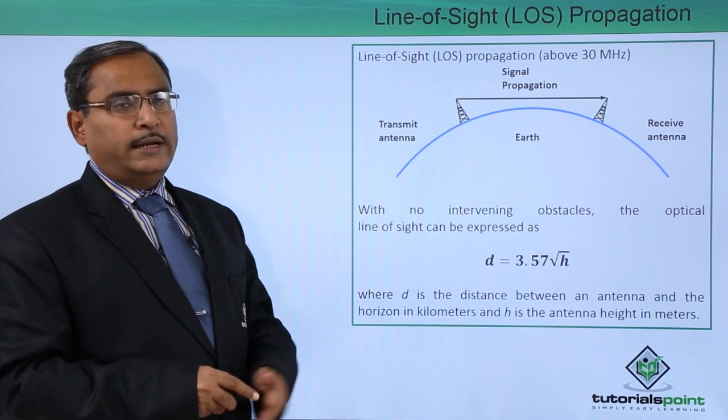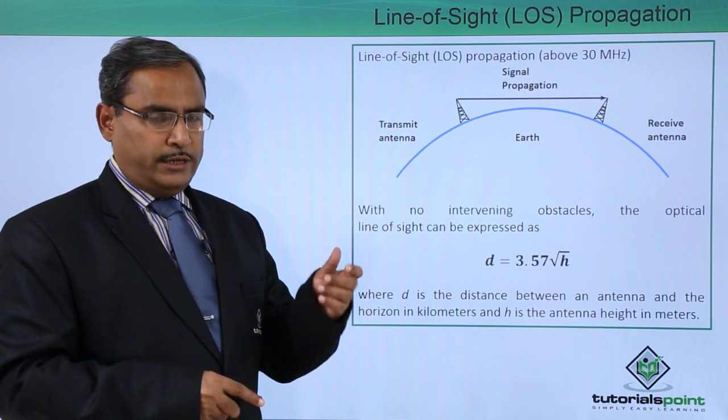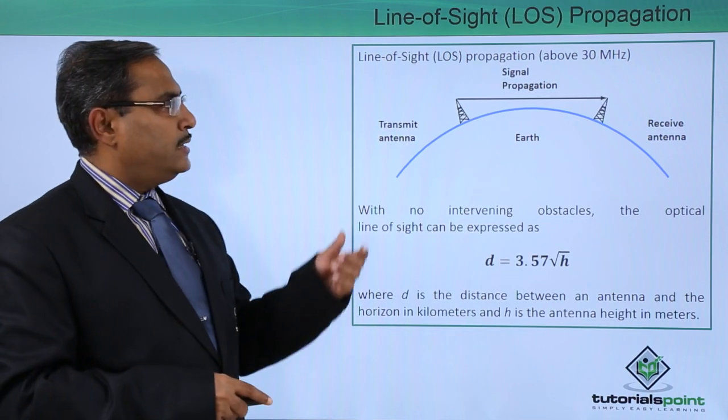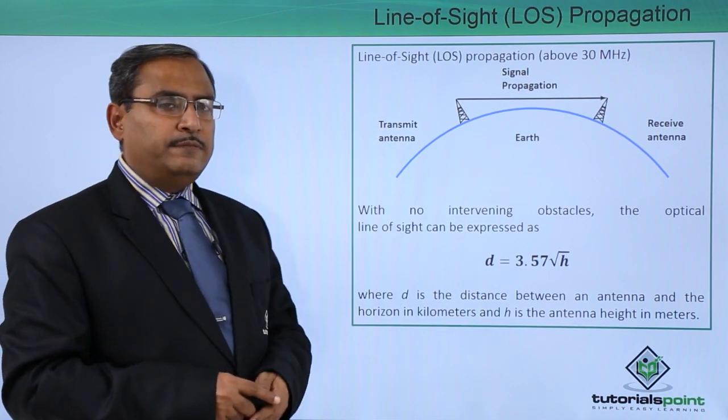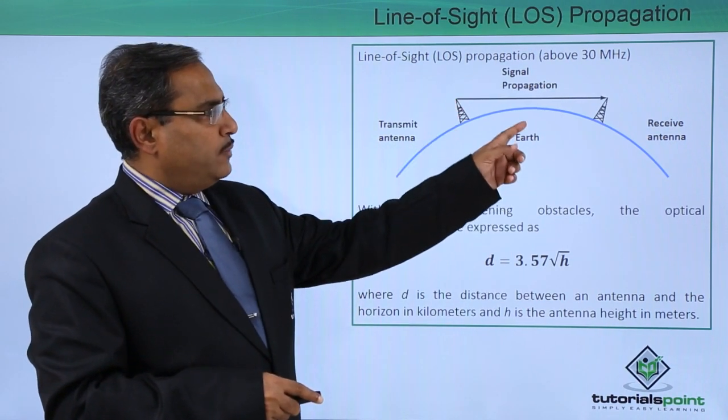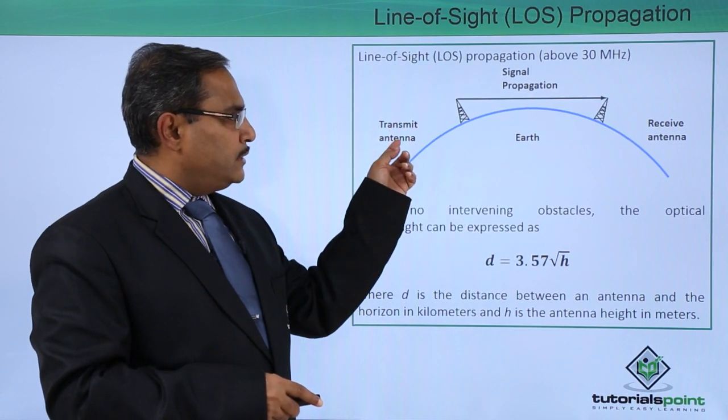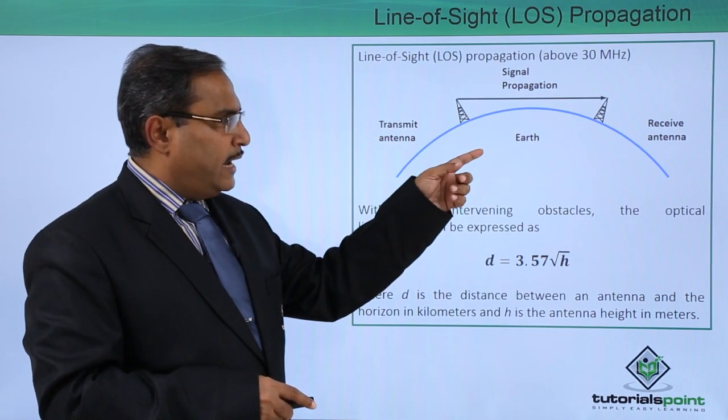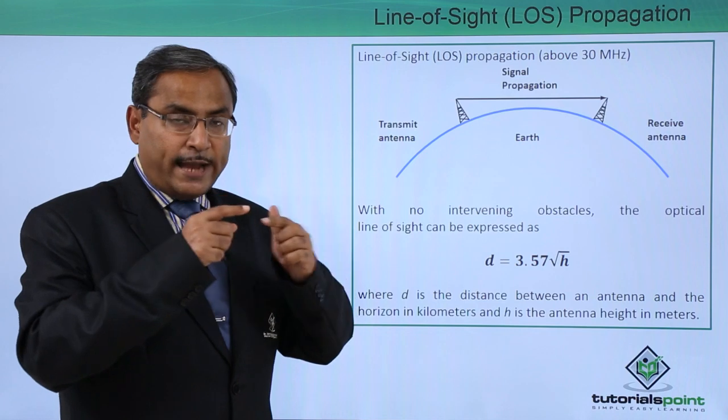Now, let us suppose this is the last one, that is the line of sight, also in abbreviated form it is LOS propagation, which is above 30 megahertz. Here you can see this is one antenna and that is one antenna; this is the transmitting antenna, that is the receiving antenna, and they are in the line of sight.